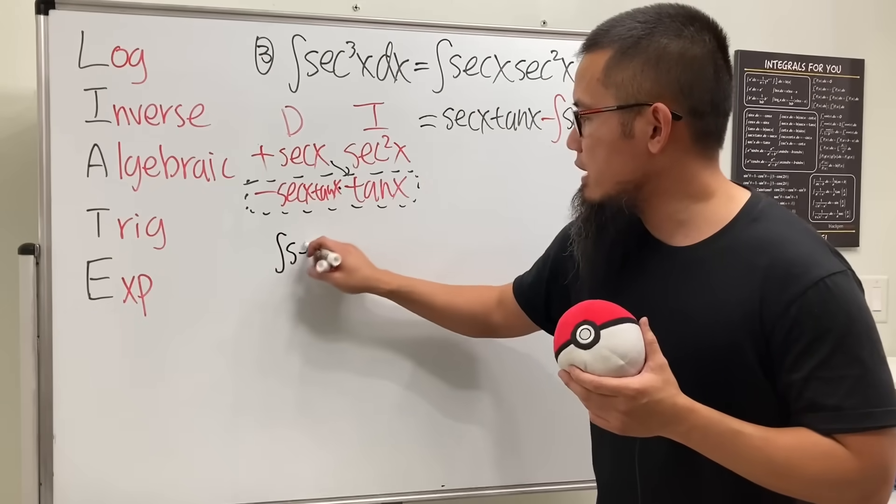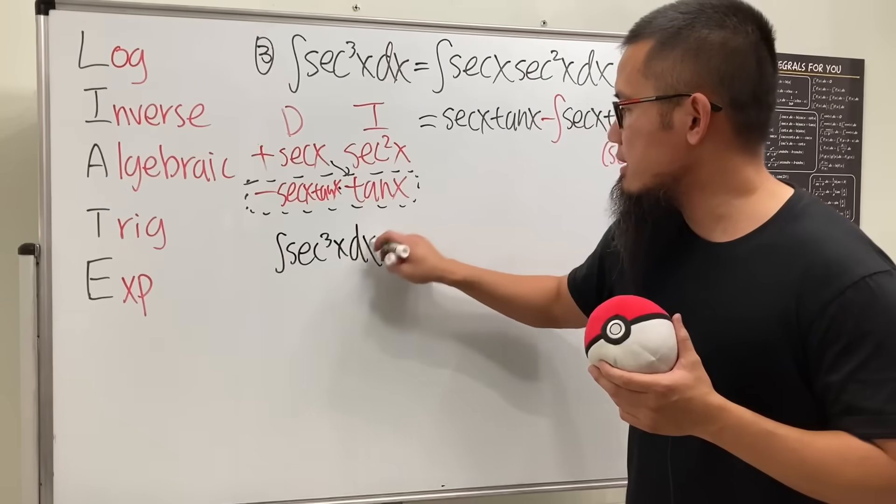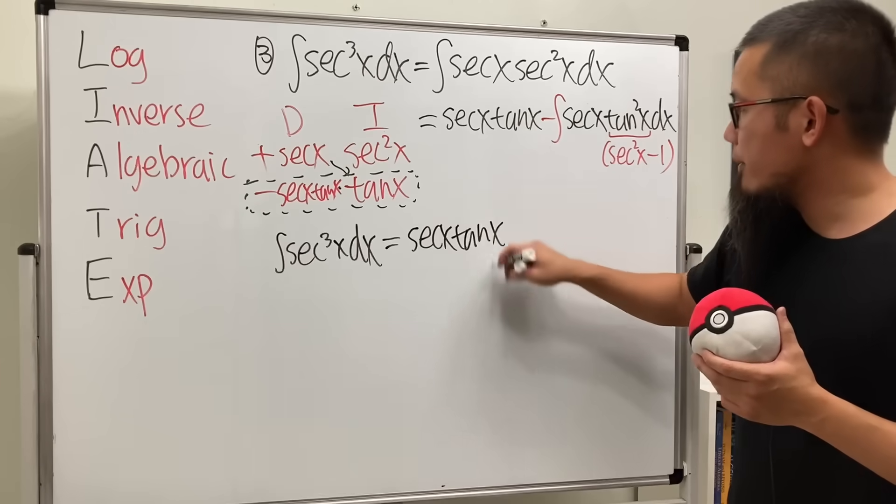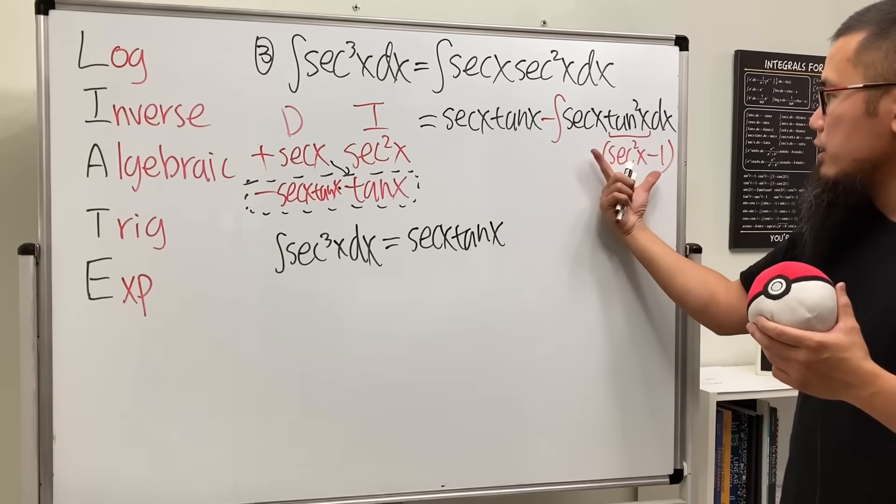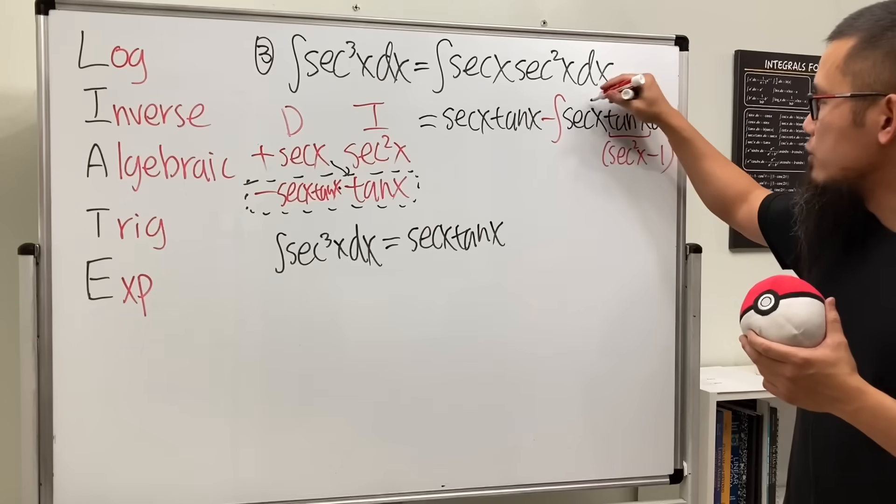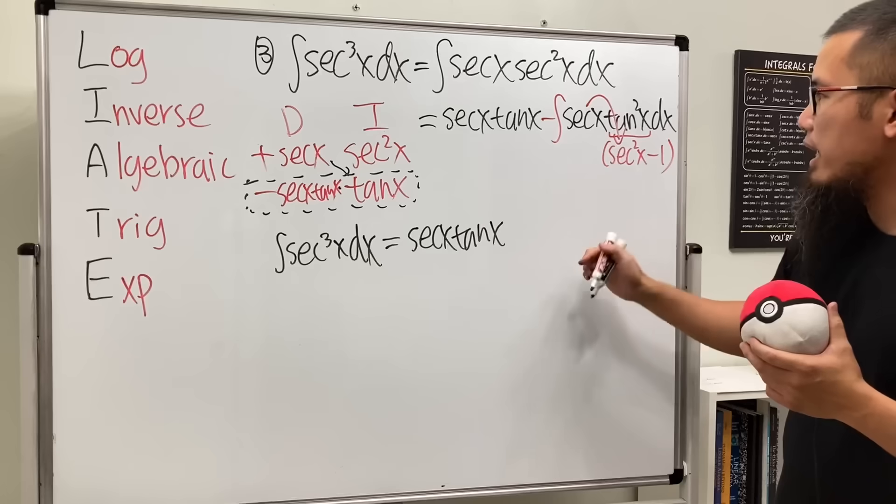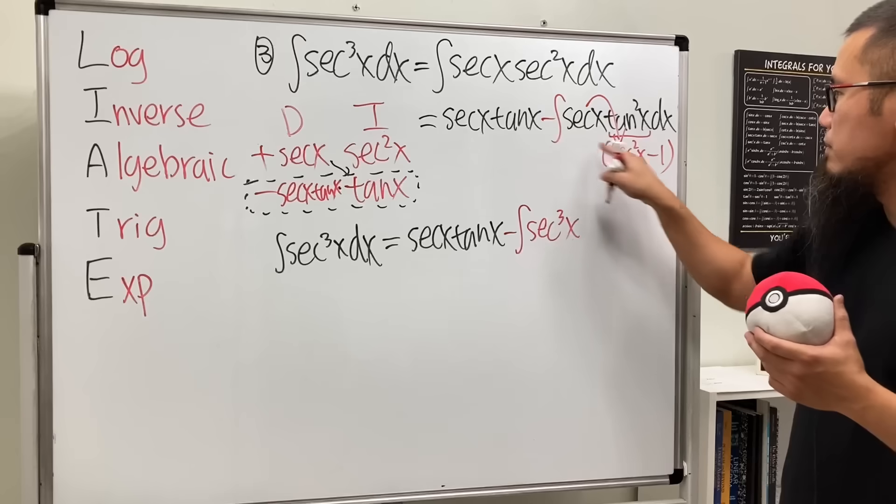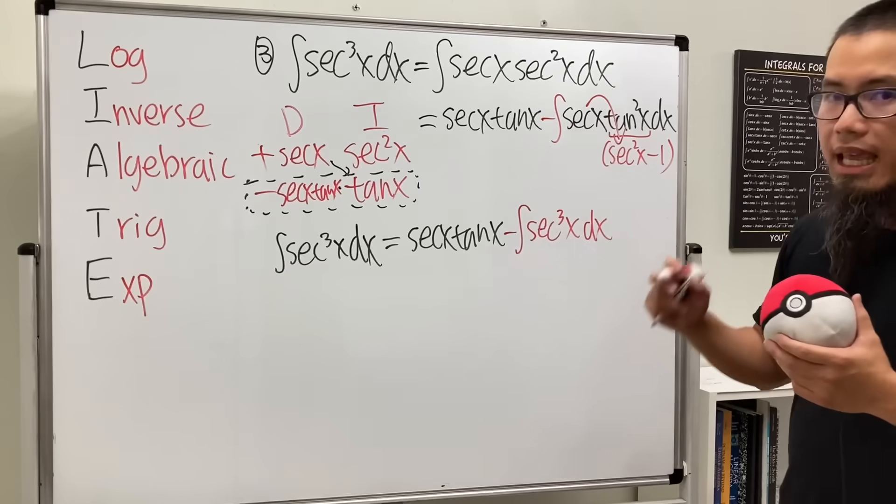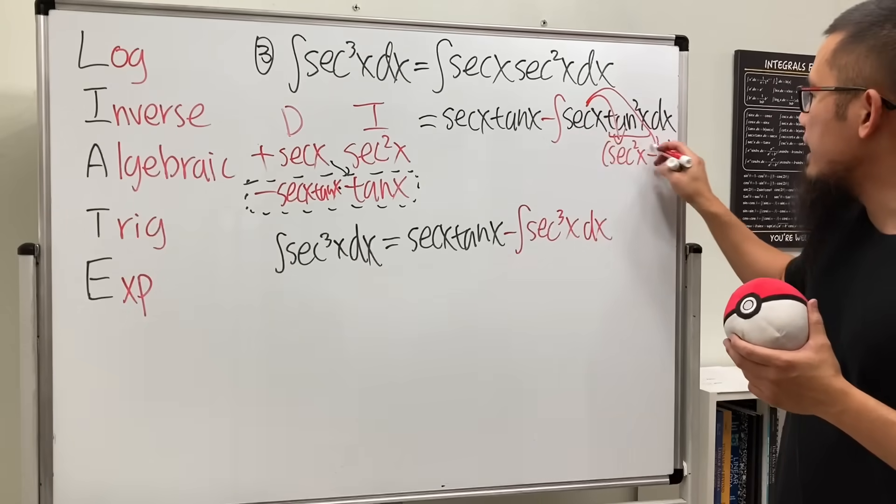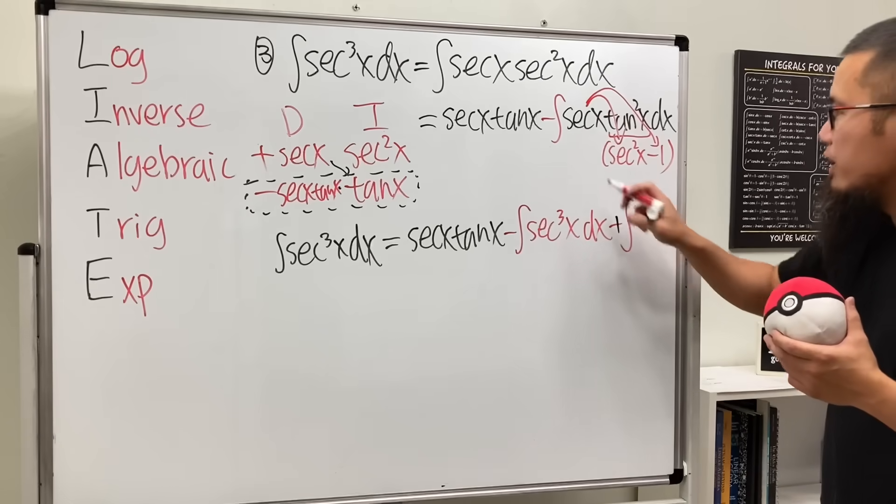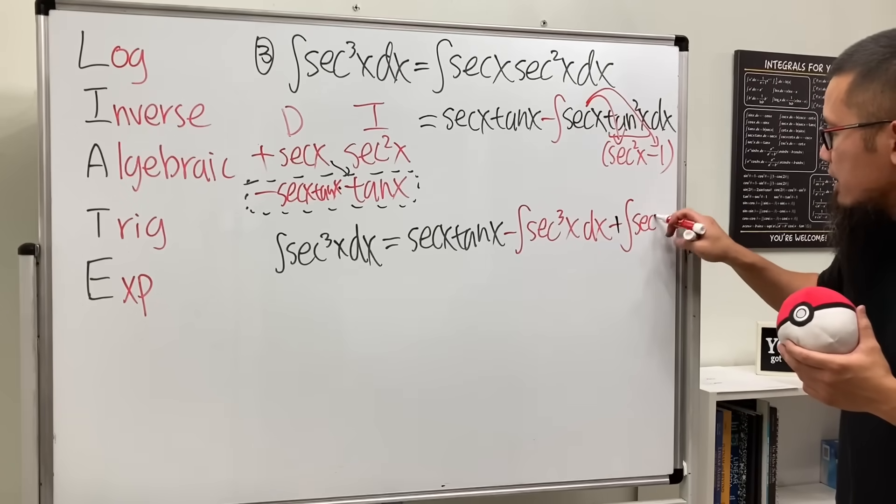So we are looking at the integral of secant to the third power x dx that's equal to that secant x tangent x. This right here is inside of the integral, but we will have to distribute the secant into here. So we get minus integral of secant to the third power x and then dx.